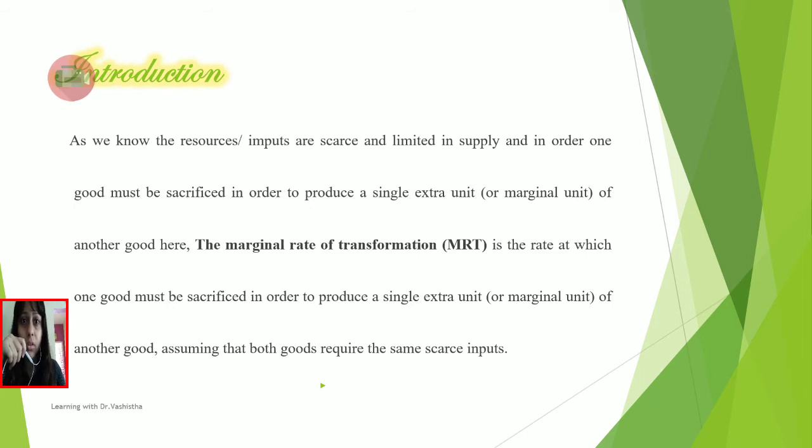To start with the introduction, we all know that the resources or inputs which are being used are very scarce in nature and limited in supply. So in order to produce one good, some marginal units of another good have to be sacrificed. The marginal rate of transformation is the rate at which one good must be sacrificed in order to produce a single extra unit or marginal unit of another good, assuming both goods require the same scarce inputs.